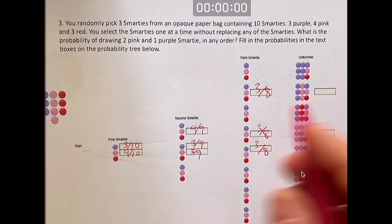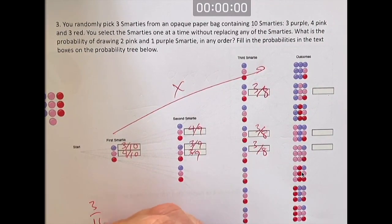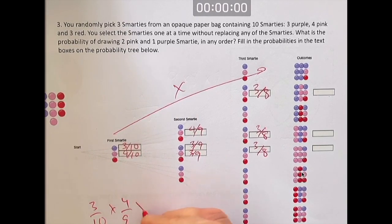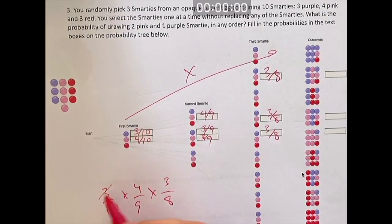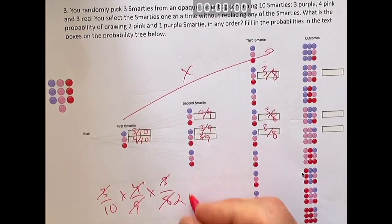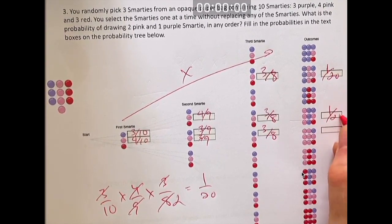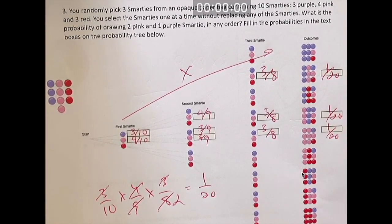Then to figure out your final, remember, you multiply going down the branches. Three tenths times four ninths times three eighths. The three and the three make nine. That totally cancels. Four goes into eight twice. We get one out of 20. That's one out of 20. This is also going to be one out of 20.